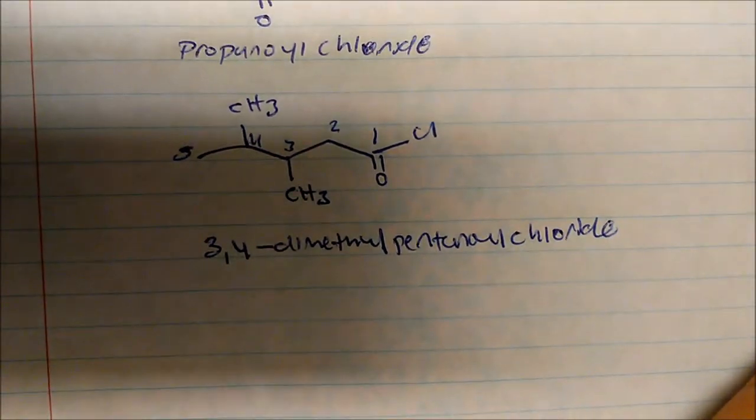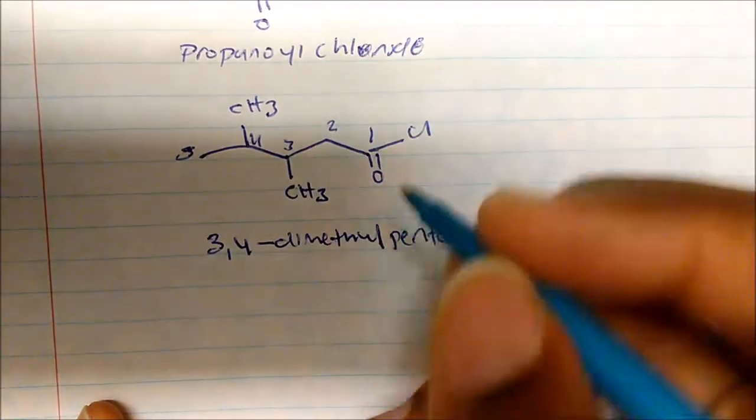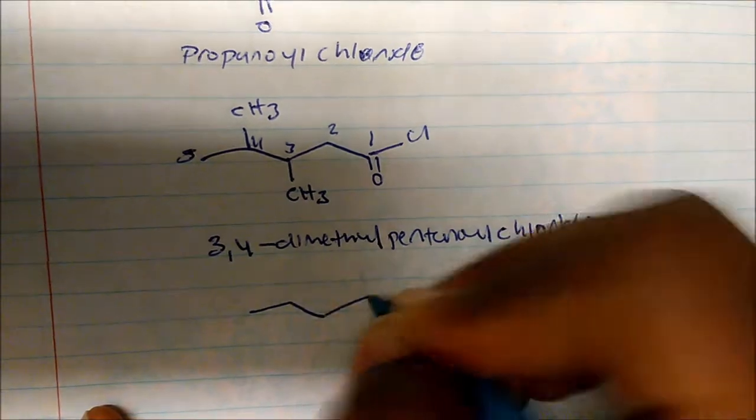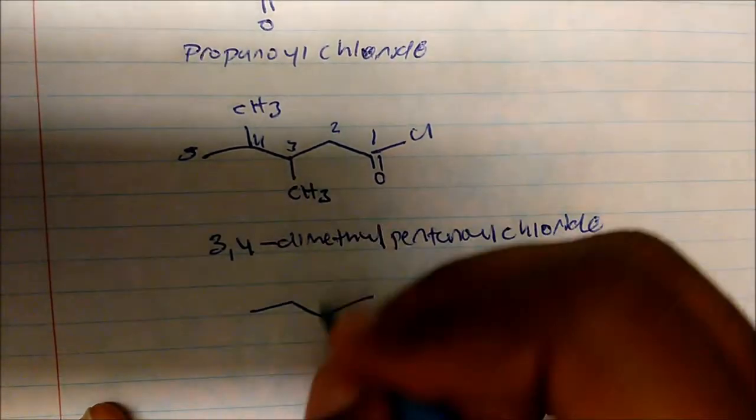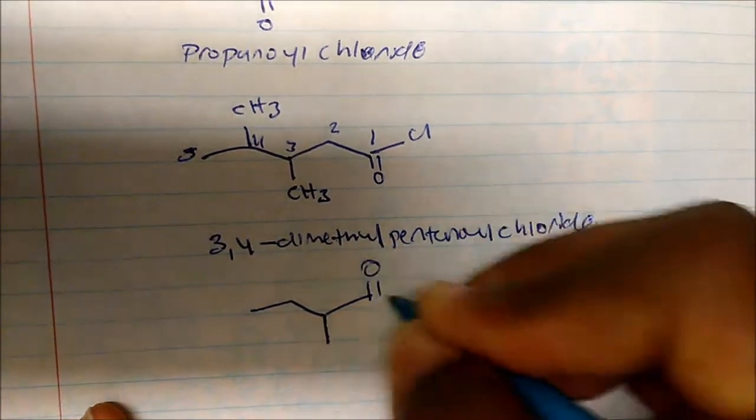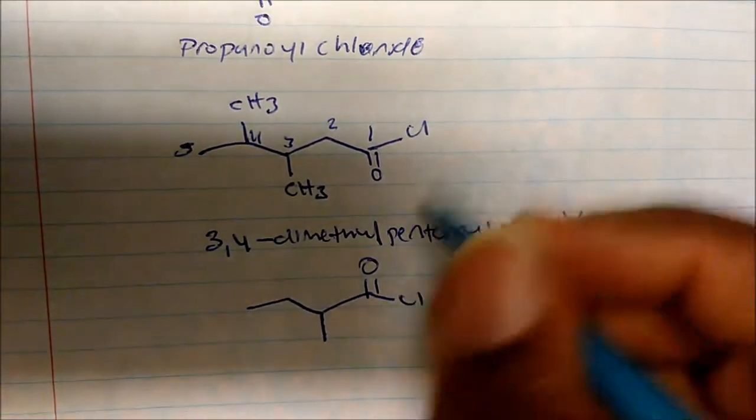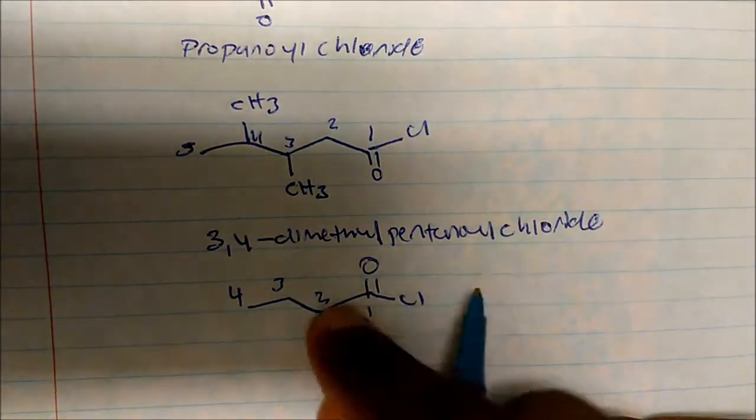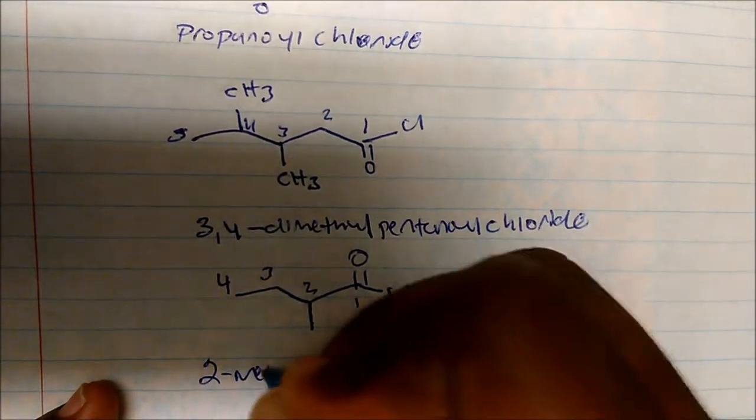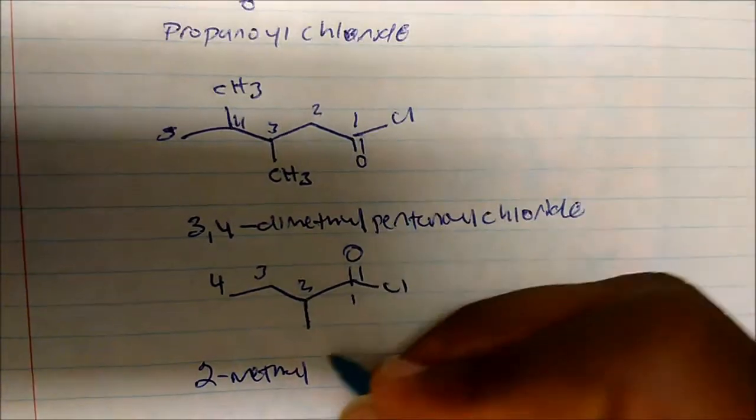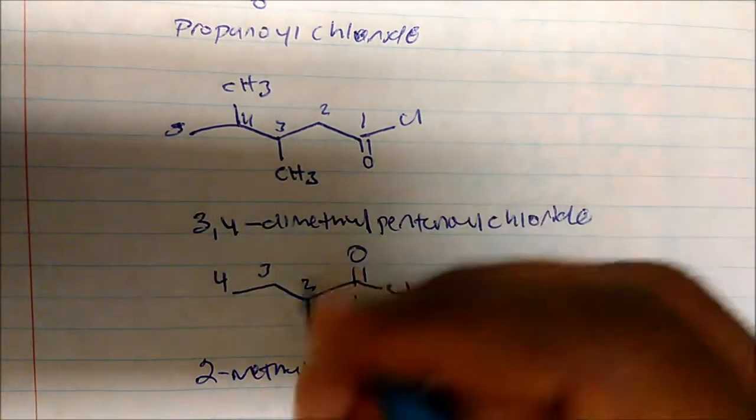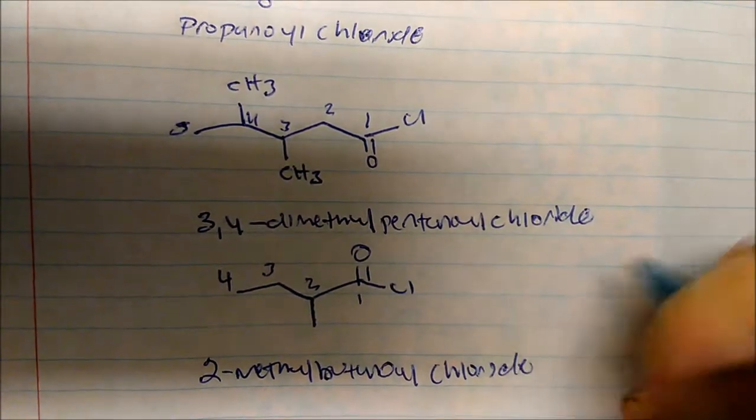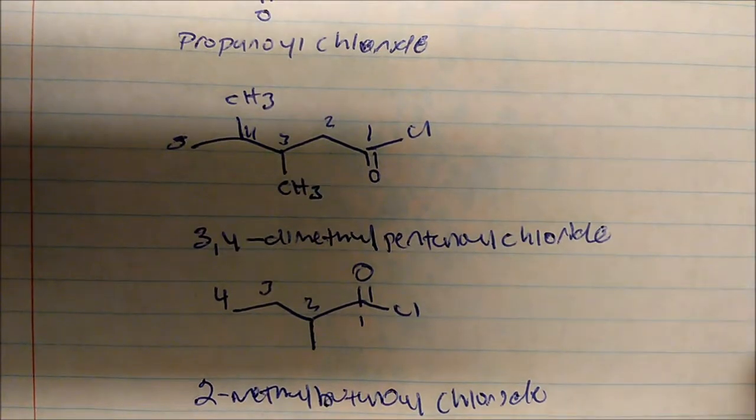How would you name this? We have a CH3 right here. So again, how we name this molecule? It's one, two, three, four. And on carbon two we have this methyl group here, so this becomes two-methyl. And it's a four-carbon chain, so this is two-methylbutanoyl chloride. Acid chlorides really aren't difficult to name.